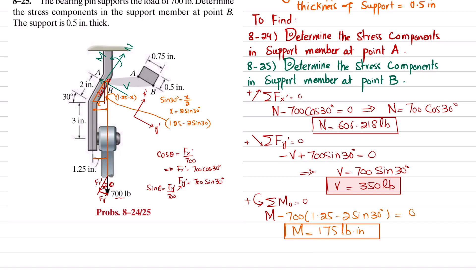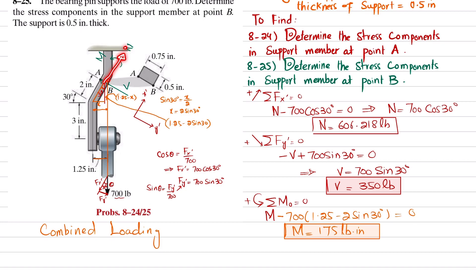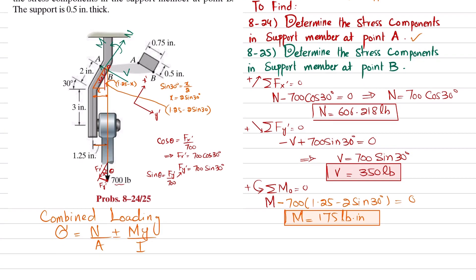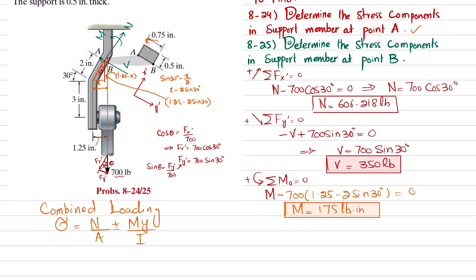This is a case of combined loading, as we have both an axial force and a moment producing bending stress. One normal stress comes from the axial load and another from bending. The combined normal stress formula is: sigma equals N over A plus or minus M times y divided by I.